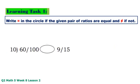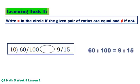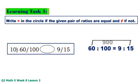Number 10: 6 times 15 equals 90, 100 times 9 equals 900. Equal.